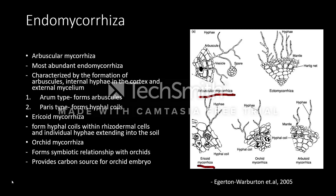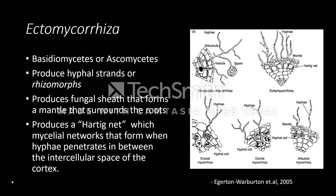Another type of endomycorrhiza is the ericoid mycorrhiza, which forms hyphal coils within root cells. The next type is the orchid mycorrhiza, which forms symbiotic relationships with orchids. Orchid embryos have almost non-existent endosperms, so these mycorrhizas provide an alternative source of carbon. Ectomycorrhizas are basidiomycetes or ascomycetes that produce hyphal strands or rhizomorphs. They form a mantle or fungal sheath that surrounds the roots, and also produce Hartig nets, which are mycelial networks formed when hyphae penetrate the intercellular spaces of the root cortex.